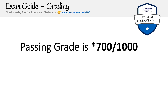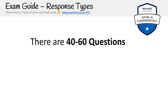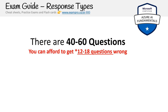The passing grade is 700 out of 1000, which is around 70%. I say 'around' because you could possibly fail with 70% due to scaled scoring. There are about 40 to 60 questions, and you can afford to get 12 to 18 questions wrong — though there's an asterisk there because not all questions are worth a single point.